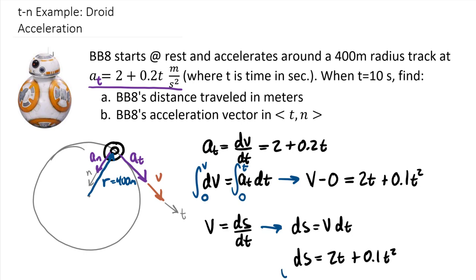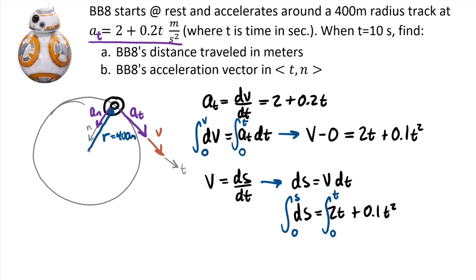I can integrate both sides of this function here from 0 to s. It turns out s is the thing we're solving for, the distance around the track. And on the right-hand side here, again, 0 to t. So performing this integral, we end up with s minus 0 on the left-hand side. And on the right-hand side,